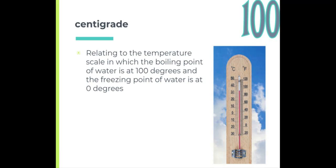Centigrade. This relates to the temperature scale in which the boiling point of water is at one hundred degrees and the freezing point of water is at zero degrees. So on the thermometer you probably see the degree sign with an F. That's Fahrenheit and that's what we use here in the US. But you may also see degrees C. We typically call it Celsius. Centigrade is a word that means the same thing as Celsius. It relates to the temperature scale in which the boiling point of water is at one hundred degrees and the freezing point is at zero degrees.